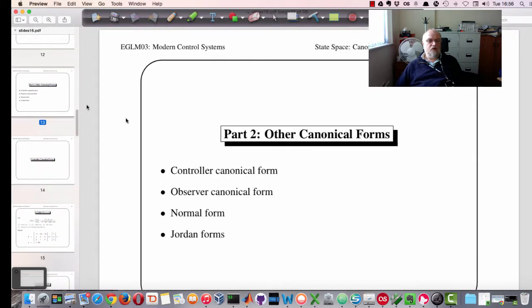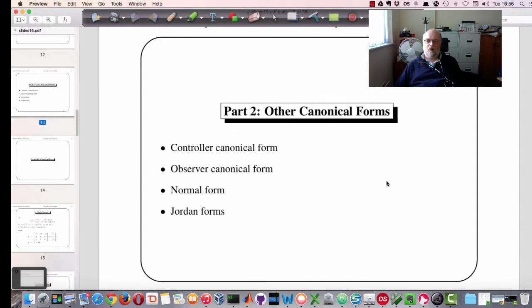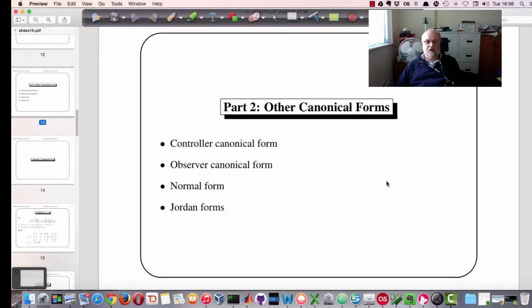In this session, we are going to continue by looking at other canonical forms that you might come across such as Controller Canonical, Observer Canonical, Normal Form and Jordan Forms. Again, we will illustrate these in the class with some examples and work solutions.